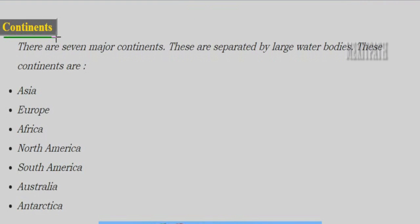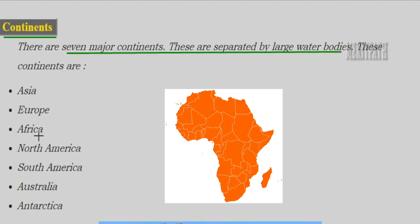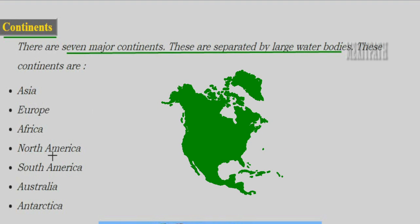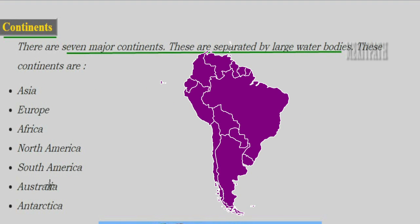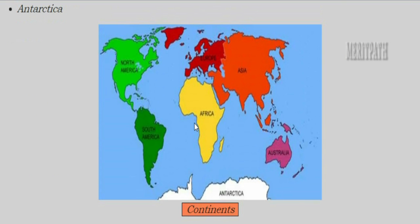The land part of the earth is covered by continents. There are seven major continents in our world, which are separated from each other by large water bodies. The names of these seven continents are Asia, Europe, Africa, North America, South America, Australia, and Antarctica. In this image we can see all seven continents.